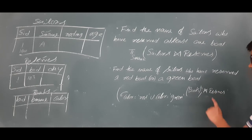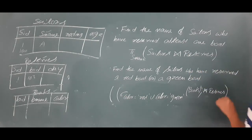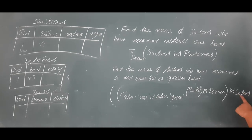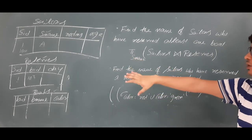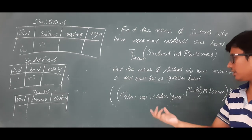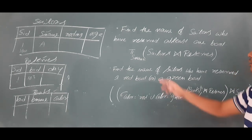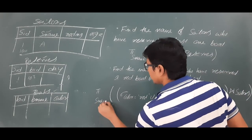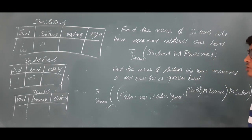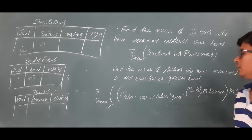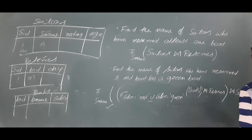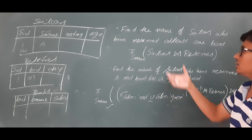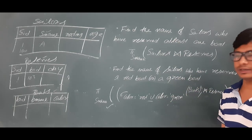On this result, apply the natural join with the sailors table. This gives the entire information of people who have reserved either a red or green boat. Finally, apply the projection operator on the attribute sailor's name to get only the names of sailors who reserved a red or green boat. This is the set union operator solution. I hope you have understood how to get the relational algebra expression for these queries. Thank you so much.